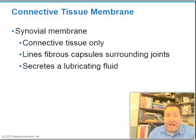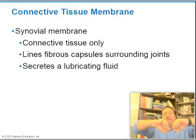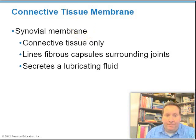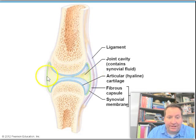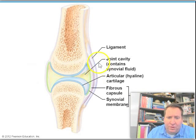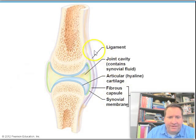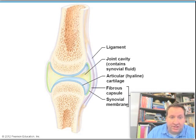The final membrane is a connective tissue membrane — the synovial membrane. It lines joint cavities between bones, and contains synovial fluid that allows bones to glide across each other relatively easily. The synovial membrane is your only membrane in the body composed exclusively of connective tissue. When we get into the skeletal system, we'll delve deeper into synovial membrane structures.